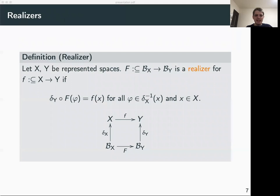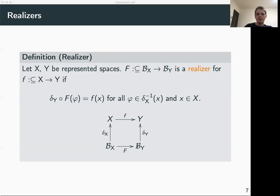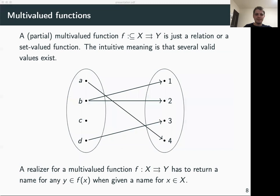Representations now allow us to add computational meaning to functions between abstract mathematical spaces X and Y using the notion of a realizer. A realizer for some function from abstract space X to Y is just a function on the naming spaces of X — the space of functions from questions to answers of X — that returns names for elements corresponding to F of X.